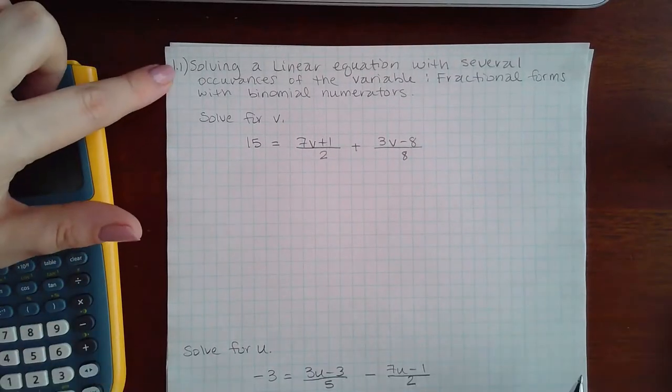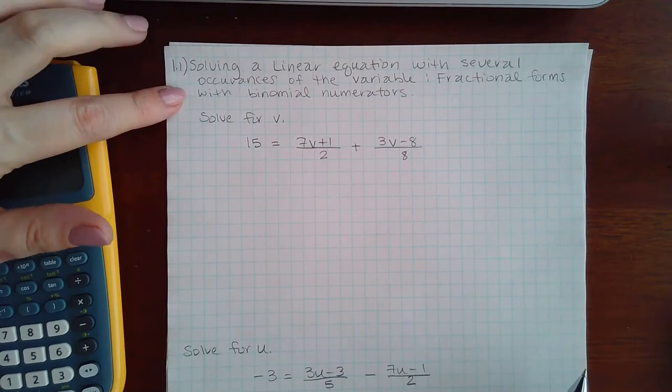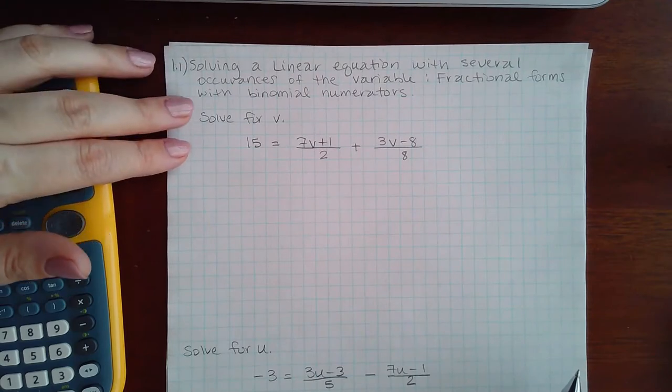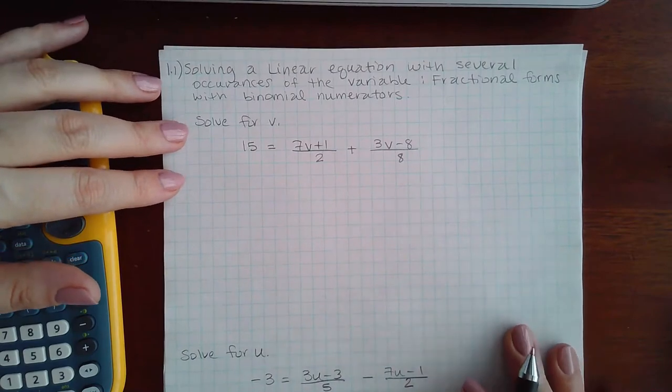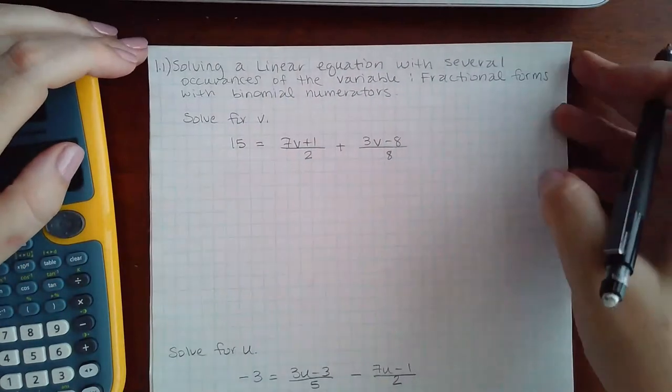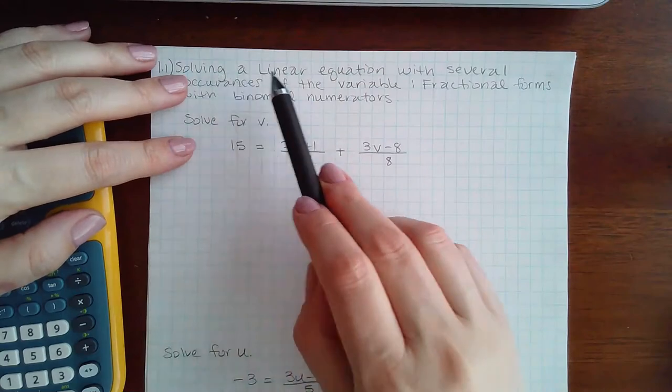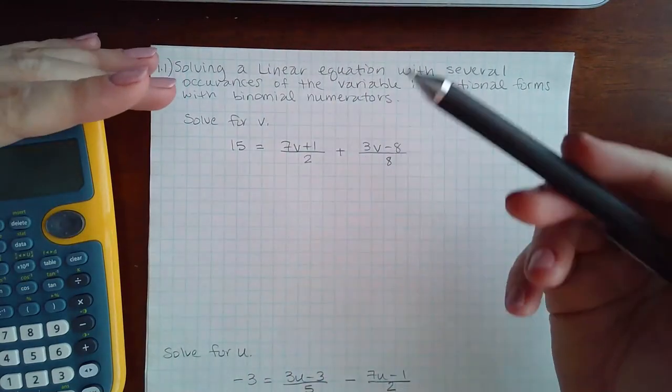Okay, here we have 1.1 solving a linear equation with several occurrences of the variable fractional forms with binomial numerators. So again, we're still just following the same six steps. Anytime it says solving linear equation, it's the same six steps.